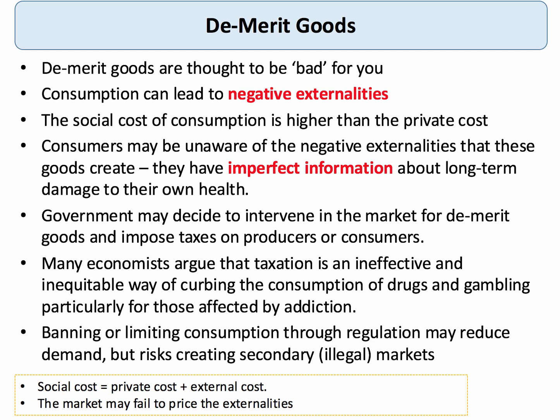The consumption of demerit goods can also confer a negative externality onto third parties — for example, passive smoking and increased healthcare costs for societies. We assume that utility-maximizing rational consumers often ignore the externalities they might impose on other people, so the social cost of consumption can be higher than the private cost.